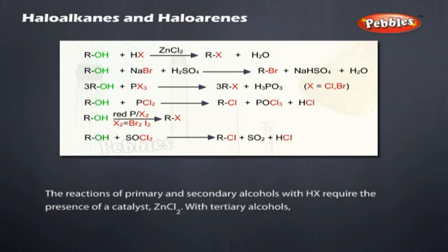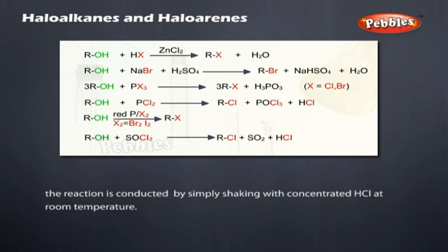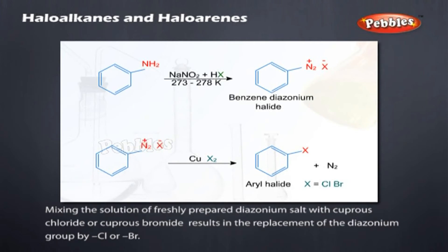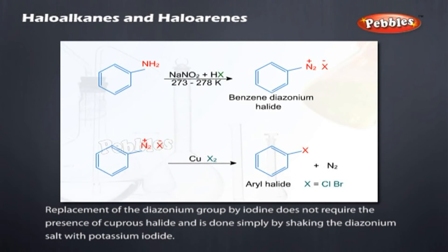With tertiary alcohols, the reaction is conducted by simply shaking with concentrated HCl at room temperature. Sandmeyer's reaction: when a primary aromatic amine dissolved in cold aqueous mineral acid is treated with sodium nitrite, a diazonium salt is formed. Mixing the freshly prepared diazonium salt with cuprous chloride or cuprous bromide results in replacement of the diazonium group by Cl or Br. Replacement by iodine is done simply by shaking the diazonium salt with potassium iodide.